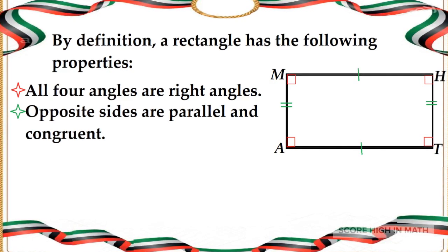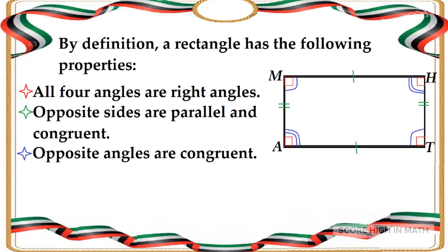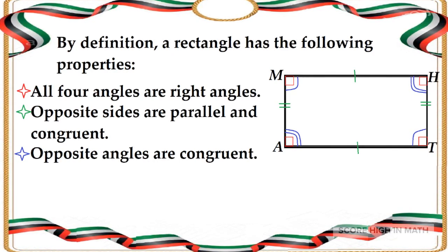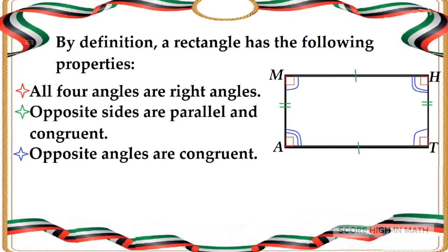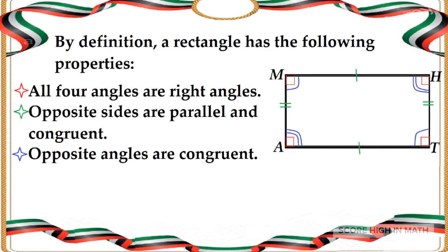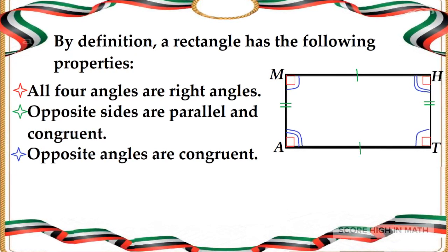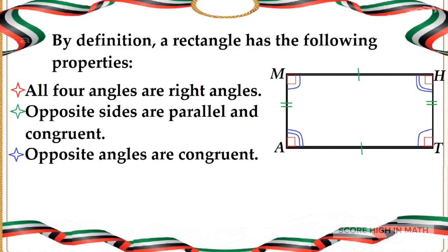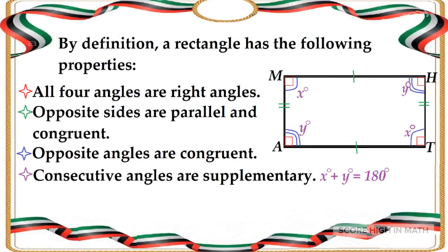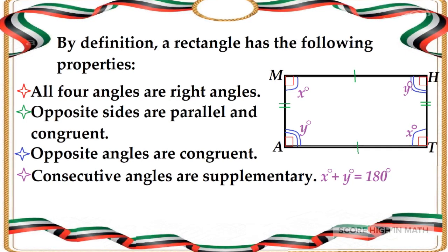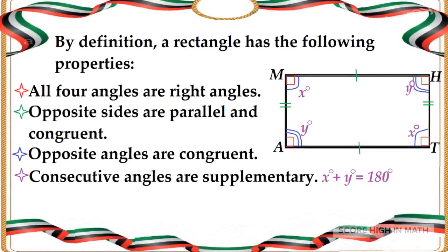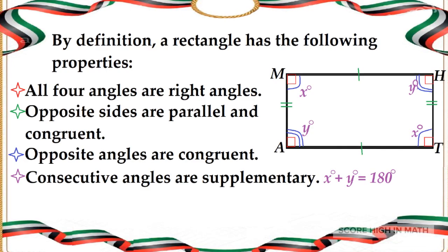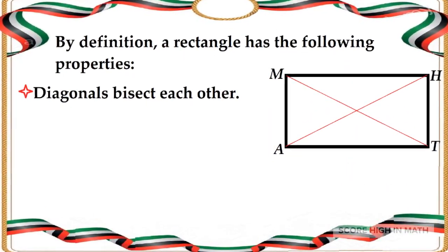Opposite angles of a rectangle are congruent. I marked them with blue color — the measure of angle M is opposite the measure of angle T, they are congruent, and the measure of angle A is congruent to the measure of angle H. Consecutive angles of a rectangle are supplementary — I marked them with x degrees and y degrees, so whenever you add them it is always equal to 180 degrees.